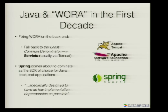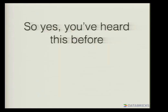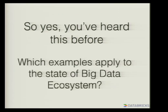What happened next was that basically everyone fell back to the least common denominator, which was a servlet container. The Spring framework proved to be very useful because it adhered to those original principles: adopt one SDK, write to it, and then be universally applicable. So anyway, we've seen this story before — write once, run anywhere. Let's see how much of this applies to where we're at in the big data ecosystem right now.